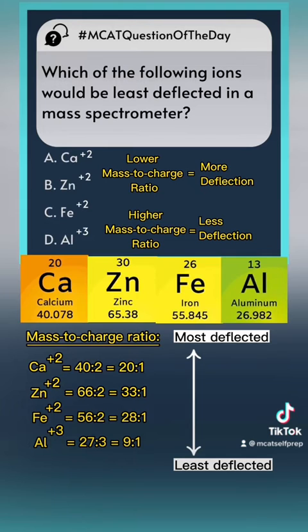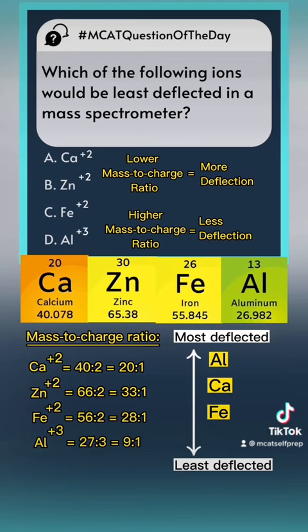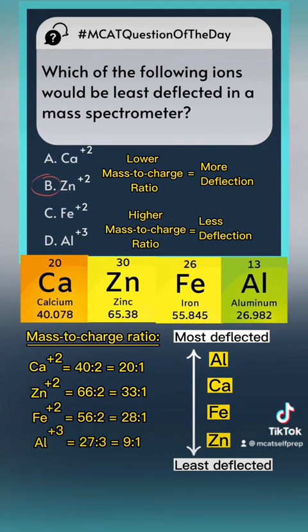So from most deflected to least deflected: aluminum has the smallest mass-to-charge ratio at 9 to 1, making it the most deflected. Next is calcium, then iron, and lastly the least deflected is zinc — answer choice B — with the highest mass-to-charge ratio of 33 to 1.